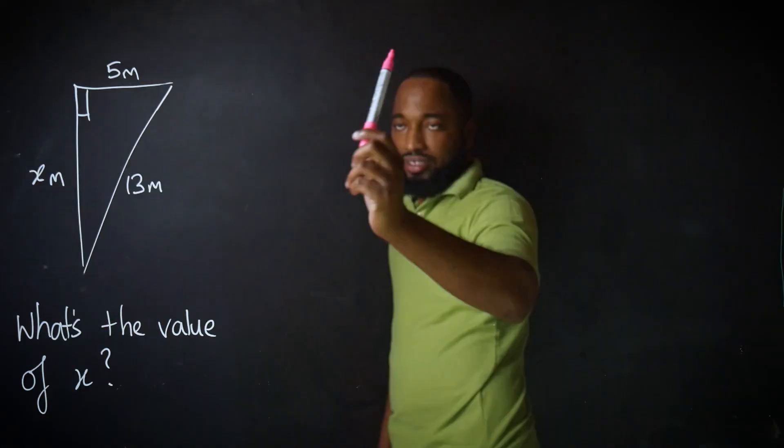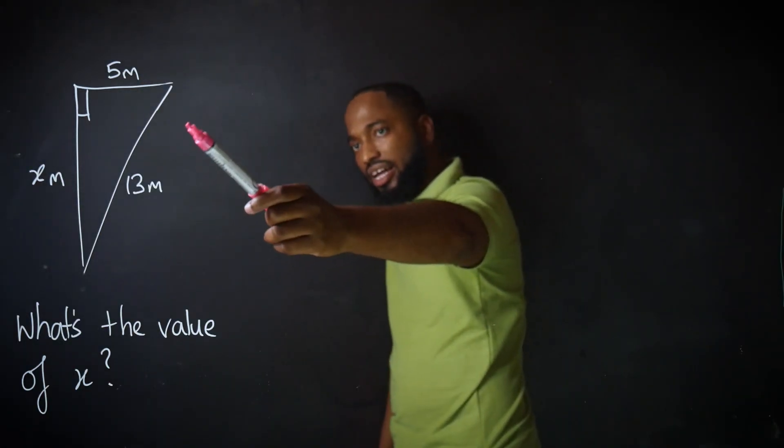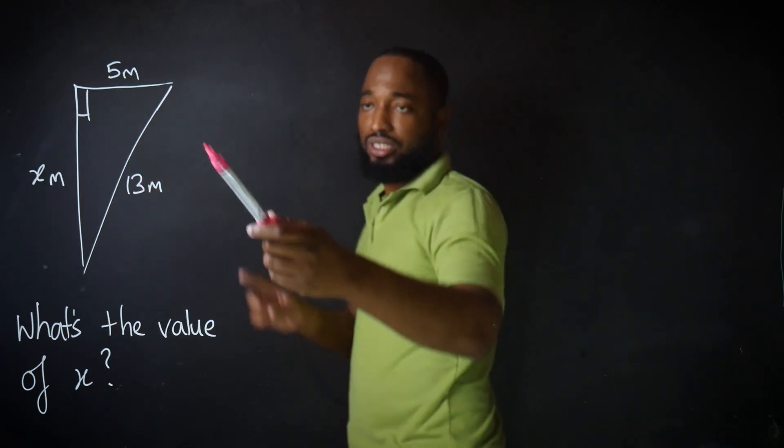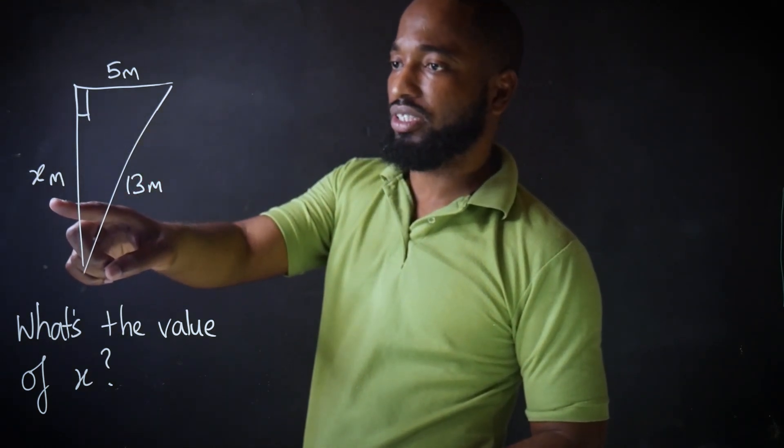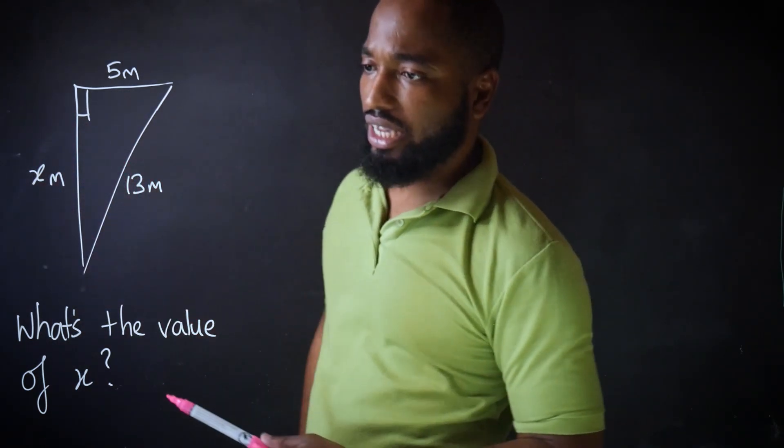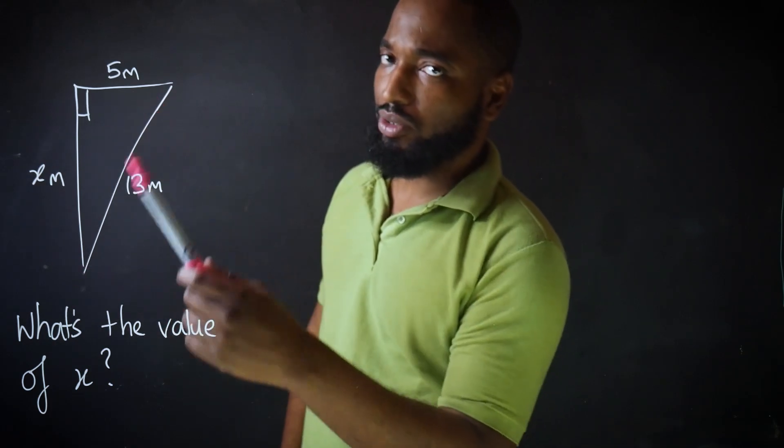Let's look at the next problem. This time the missing side is called X and notice the missing side is not the hypotenuse. It's one of the shorter sides. The longer of the shorter sides.